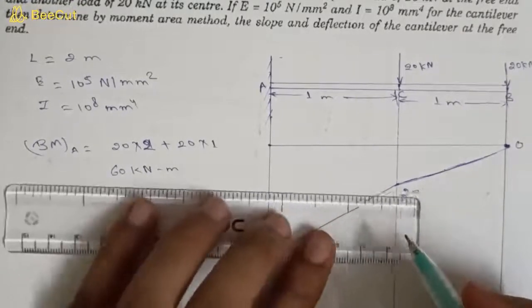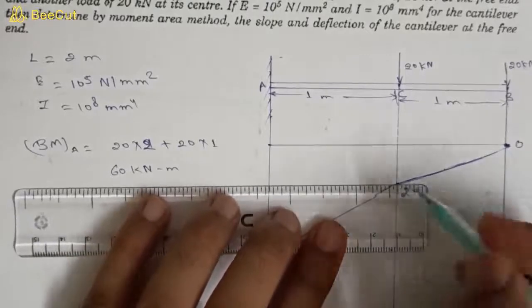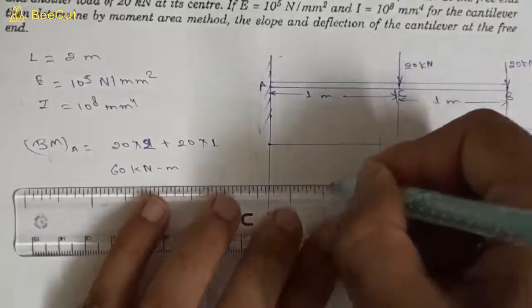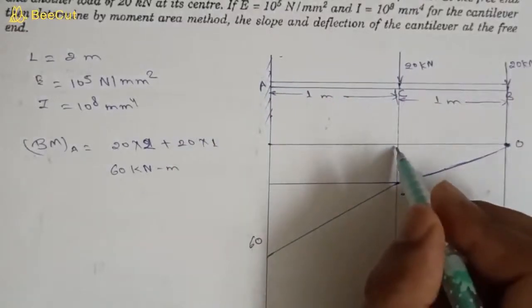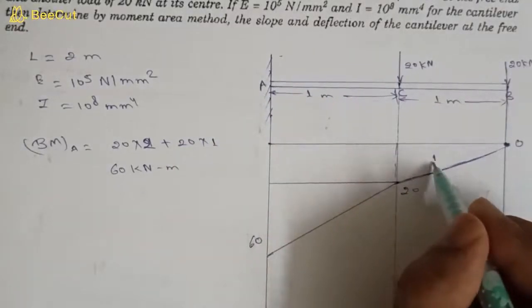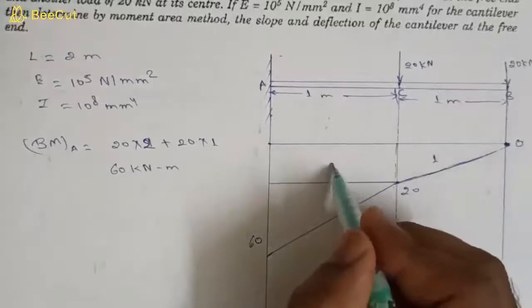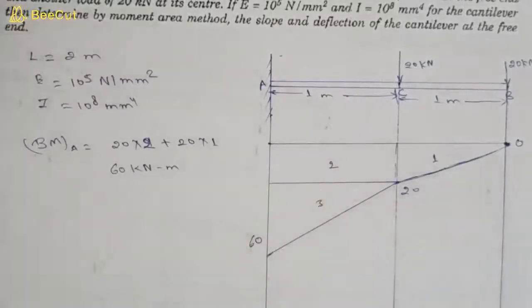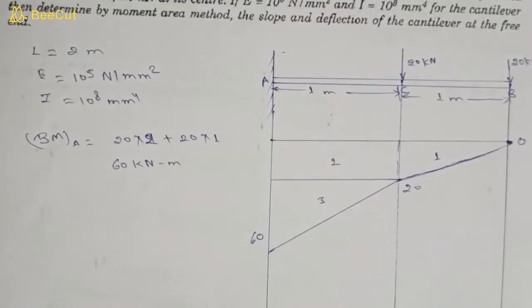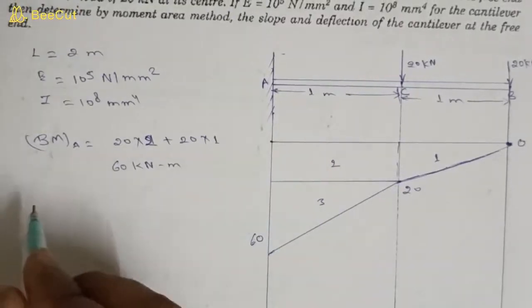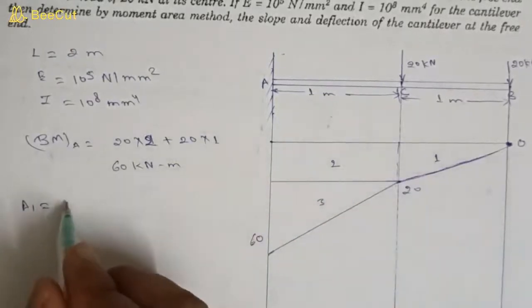We have less space, so we draw a parallel line from here so that we can calculate area easily. We divide the bending moment diagram into three parts: area 1, area 2, and area 3, so that we can work with each separately.